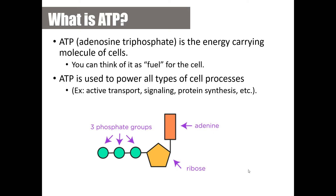You can think of ATP as fuel for your cell — just like your car can't run without fuel, your cells cannot run without ATP. ATP is used to power all types of cell processes. We've talked about active transport and signaling, and next unit we'll cover protein synthesis, which also requires ATP.